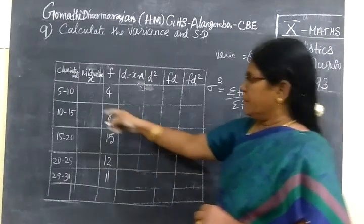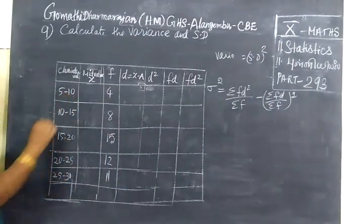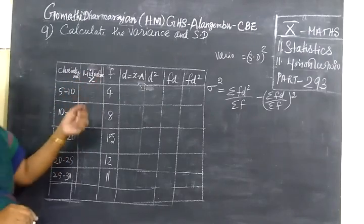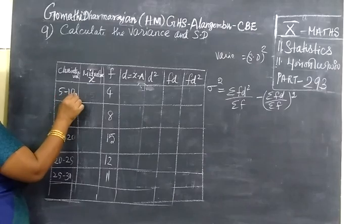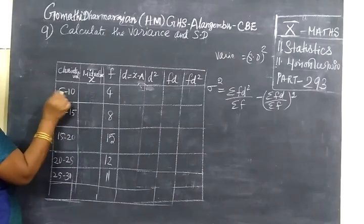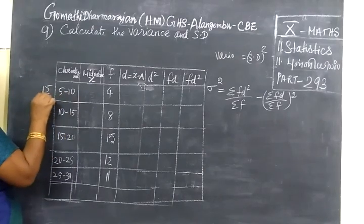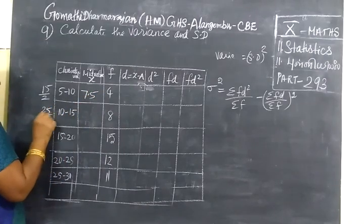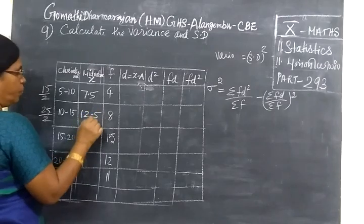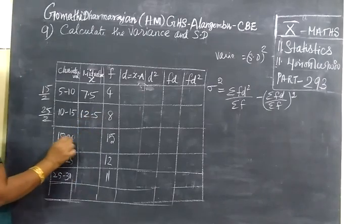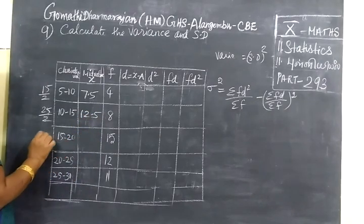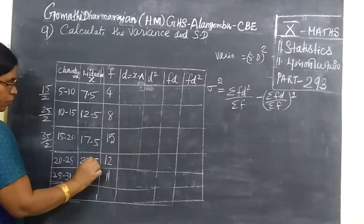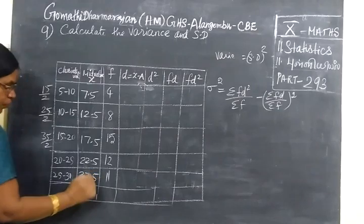Here the class interval is given. Find the mid value x. Upper limit plus lower limit divided by 2. If we add 0 plus 15, divided by 2 gives 7.5. Then 5 plus 20 gives 25, divided by 2 is 12.5. Then 10 plus 20 gives 30, divided by 2 is 17.5. Then 22.5 and 27.5.